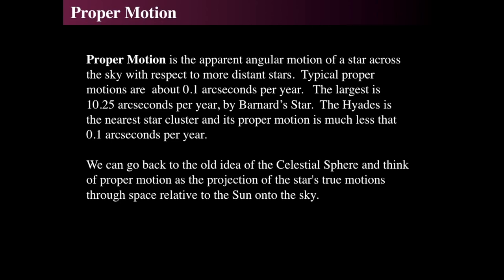Parallax is due to the motion of the Earth around the Sun. But there is also an actual motion called proper motion — the apparent angular motion of the star across the sky with respect to more distant stars, because the star is itself moving through space. Proper motions are really small, on the order of 0.1 arc seconds per year. The largest one is Barnard's star, which moves about 10 arc seconds per year.